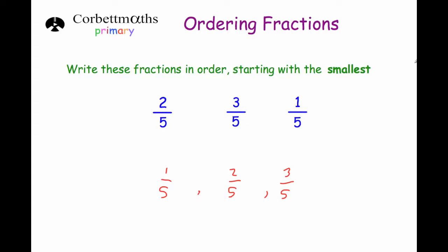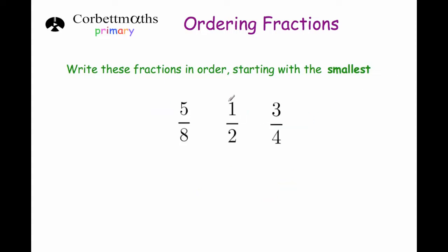The reason it was easy was because we were comparing fractions which were all fifths — in other words, they all had the same number on the bottom of the fraction, or the same denominator. Now we're going to look at what a typical exam question would look like where they wouldn't all necessarily have the same denominator. They will have different numbers.